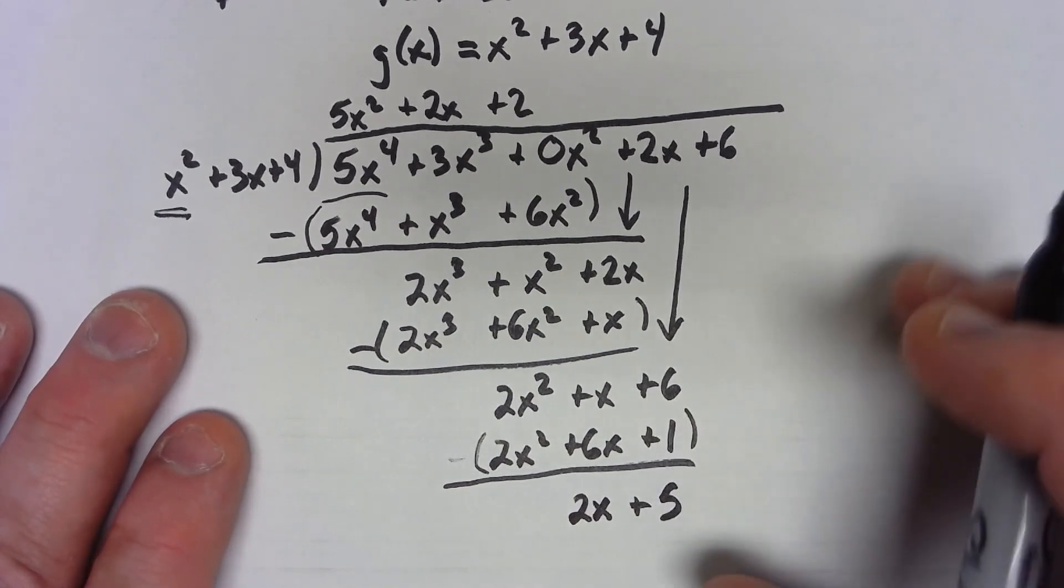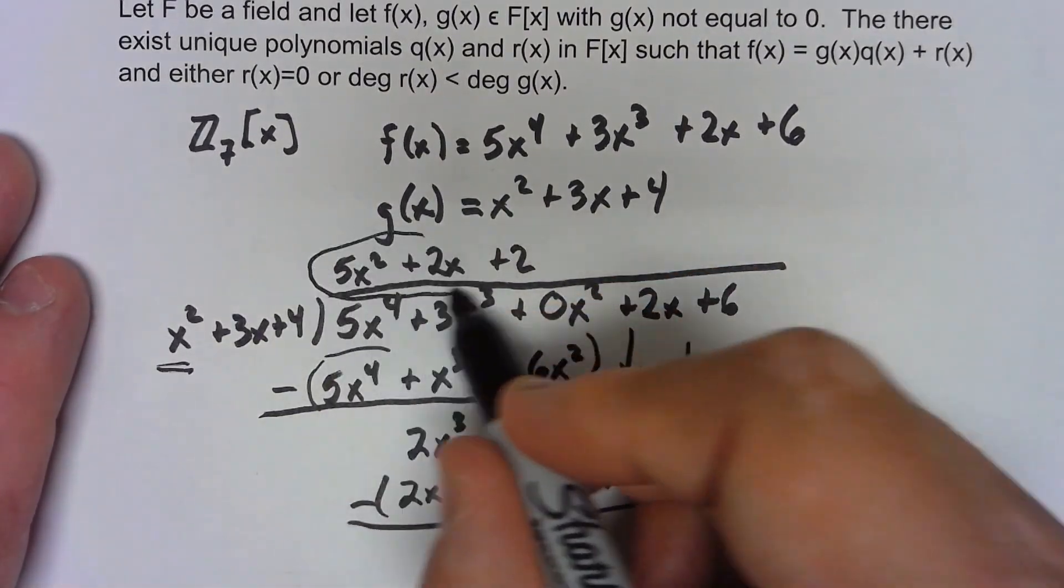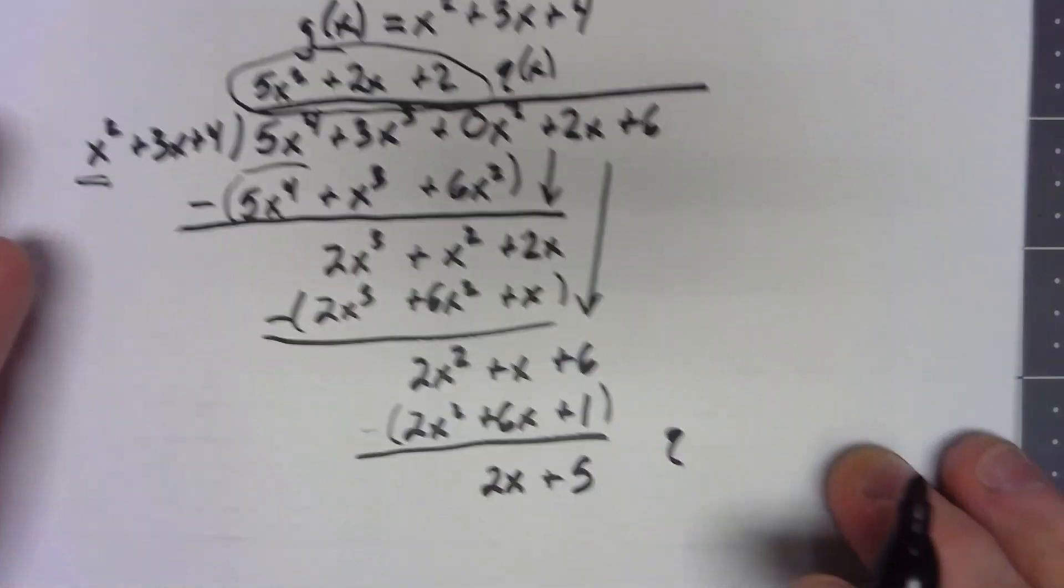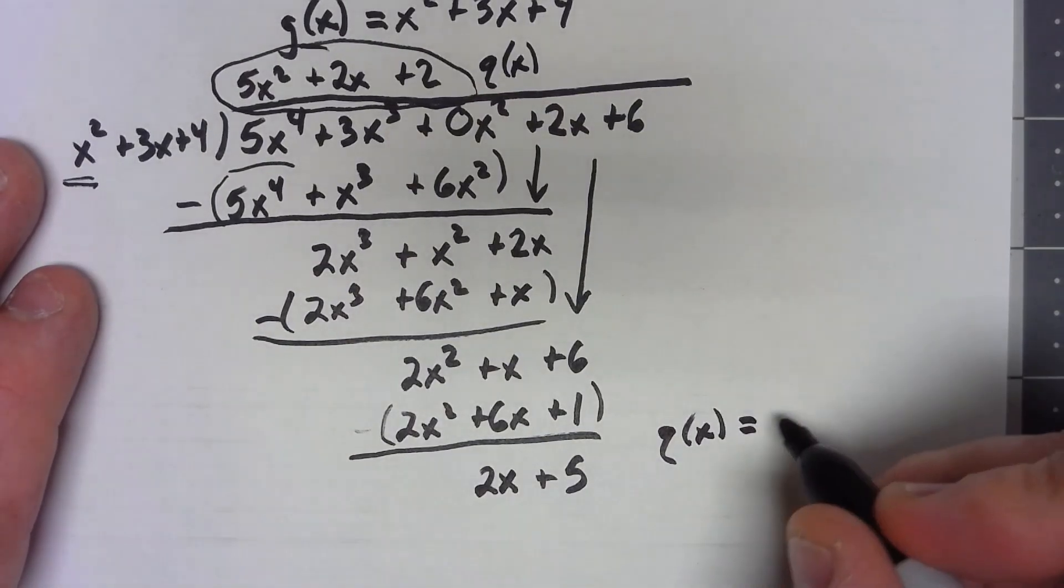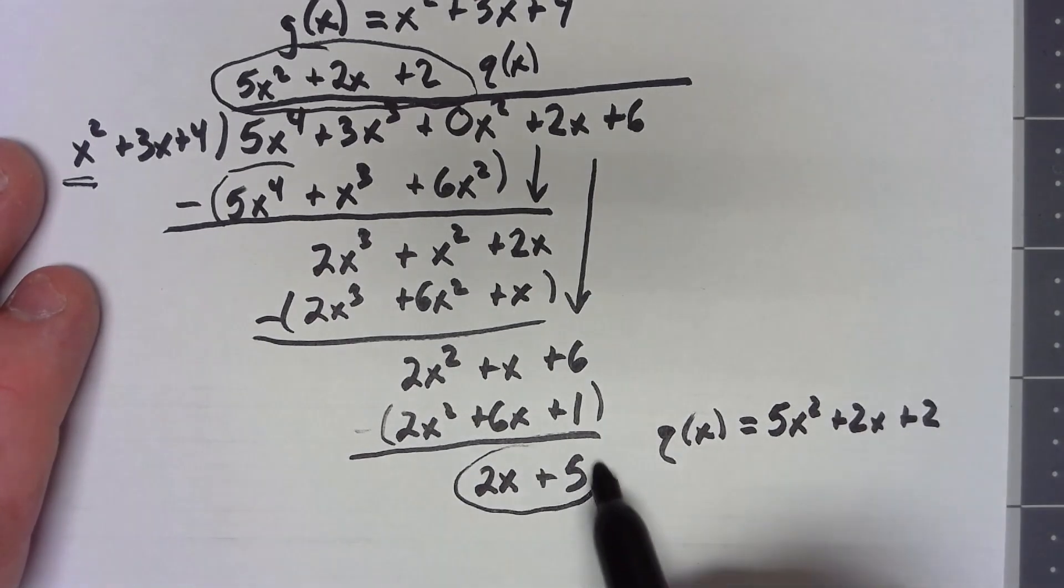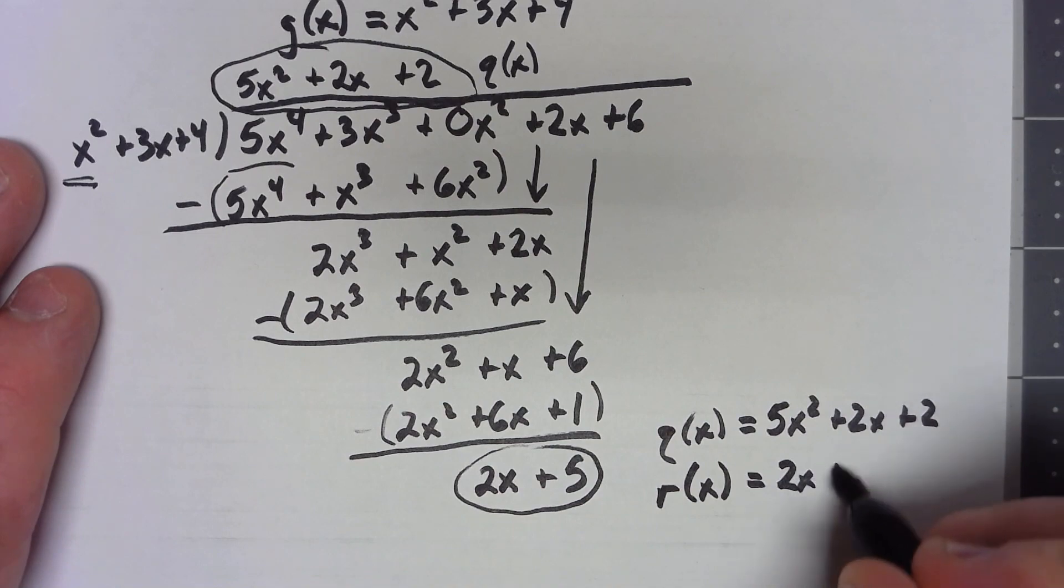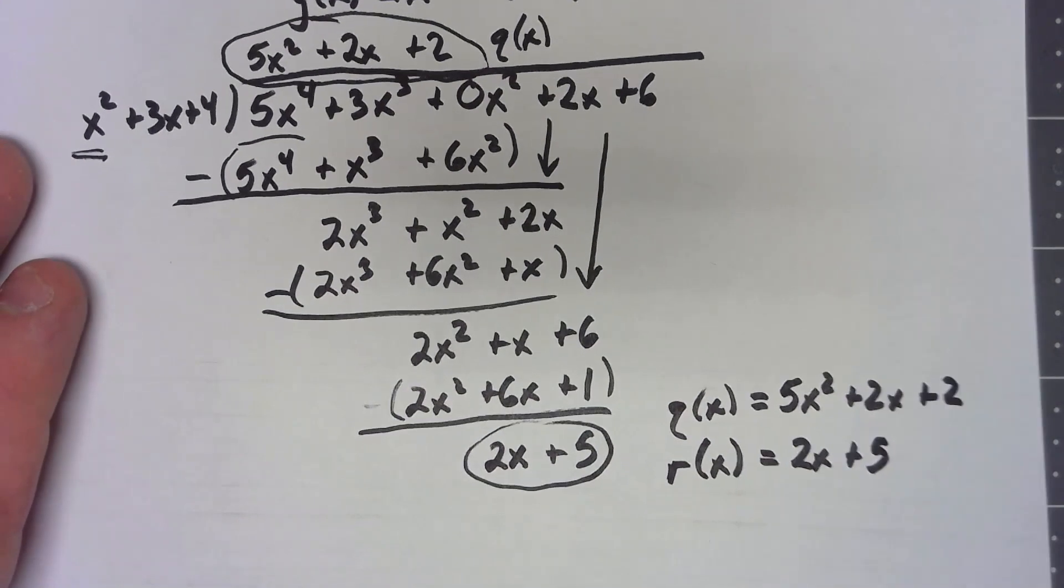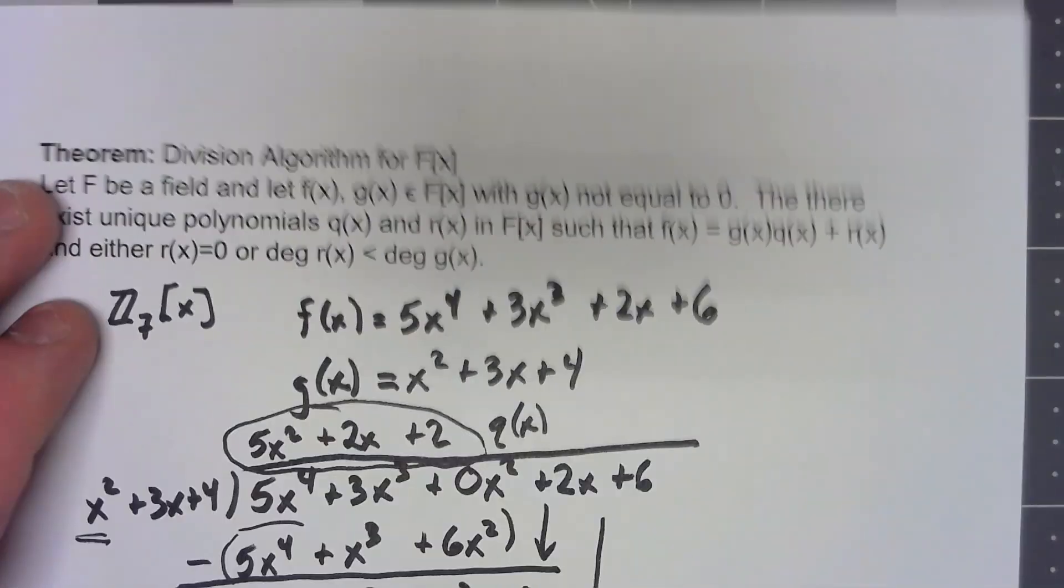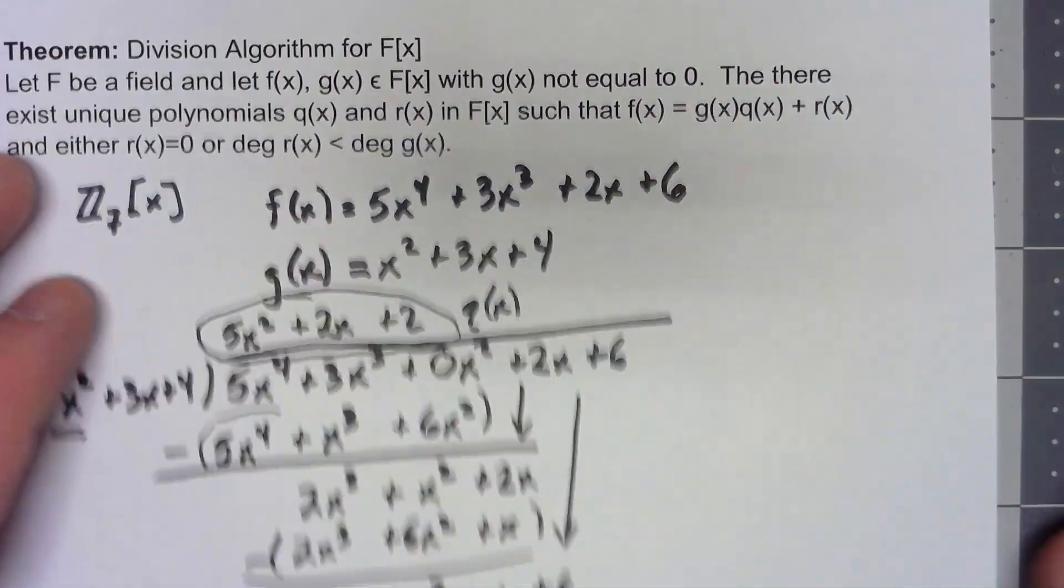So through this whole thing, this up here is our q of x. So q of x is the 5x squared plus 2x plus 2, and this down here, what we were left with when we couldn't go any further, that's the r of x. And then in general, well, not in general, specifically what we have, this f of x, the whole thing, is the thing I was dividing by times my quotient plus my remainder.